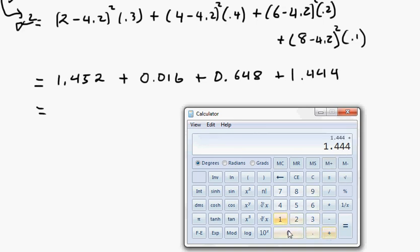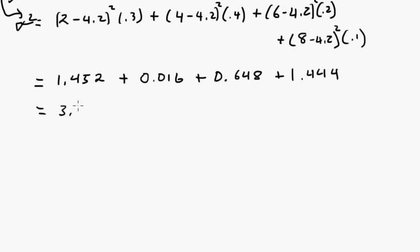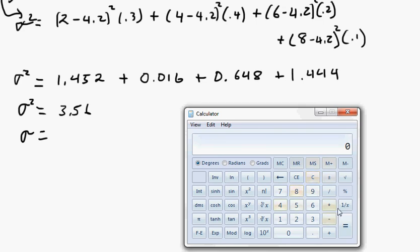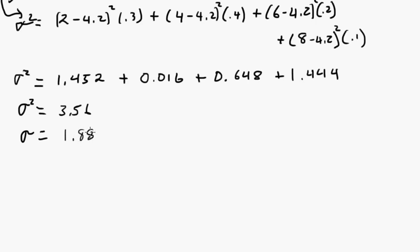So we just need to add these up. So I've already got 1.444, so plus 0.648 plus 0.016 plus 1.452 equals 3.56. So 3.56, and then we've got to take the square root of that. For this calculator, you put the number in first. 3.56 square root is 1.887. So 1.887.